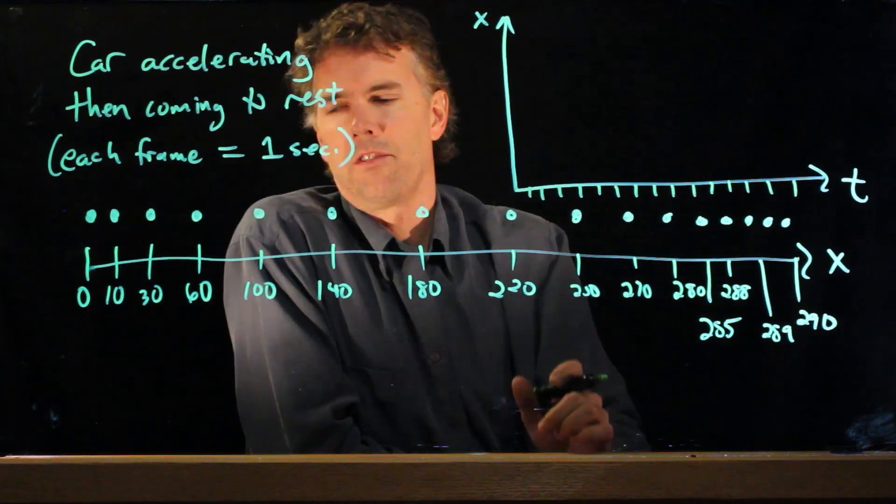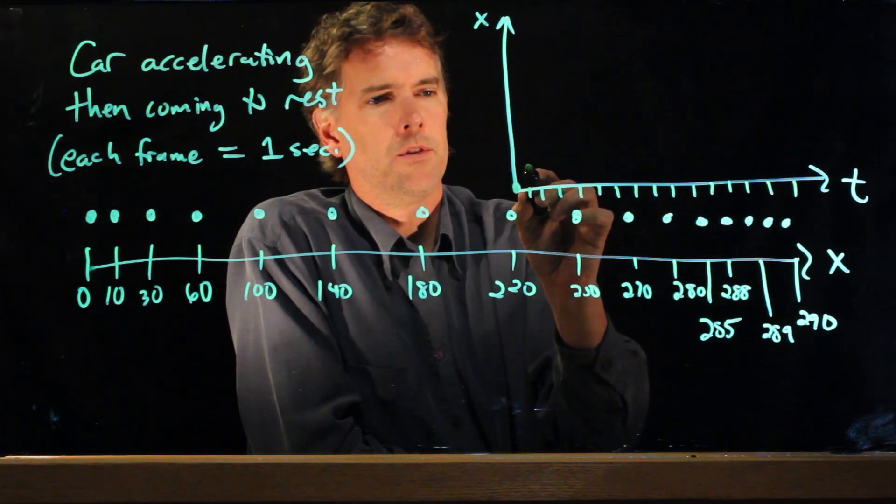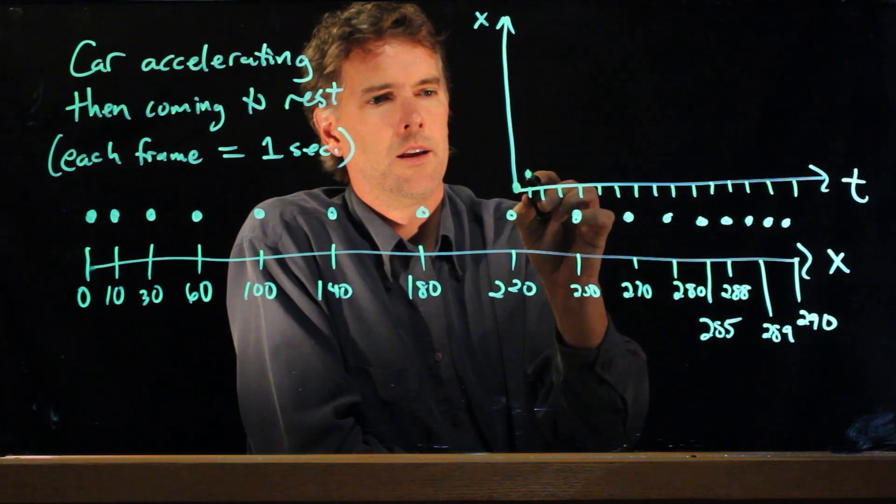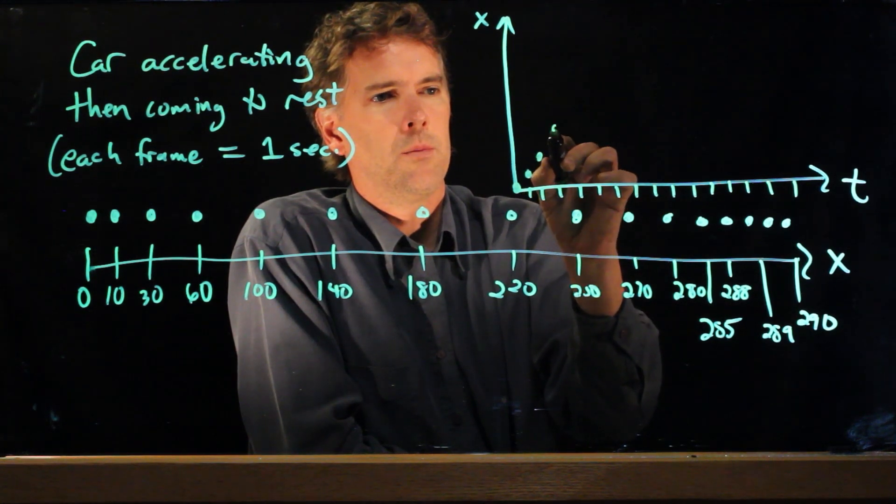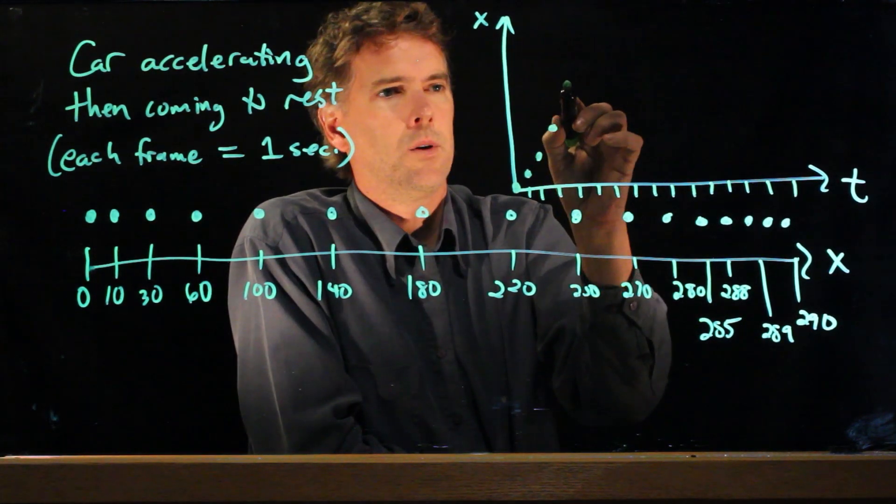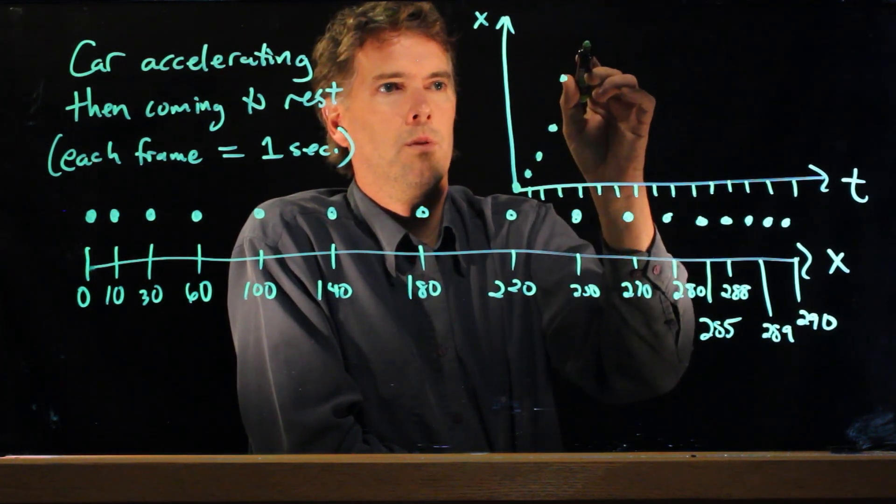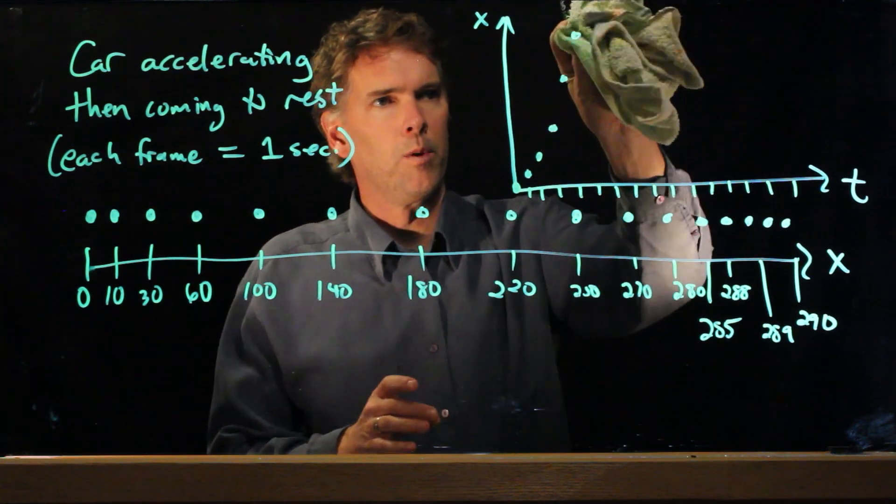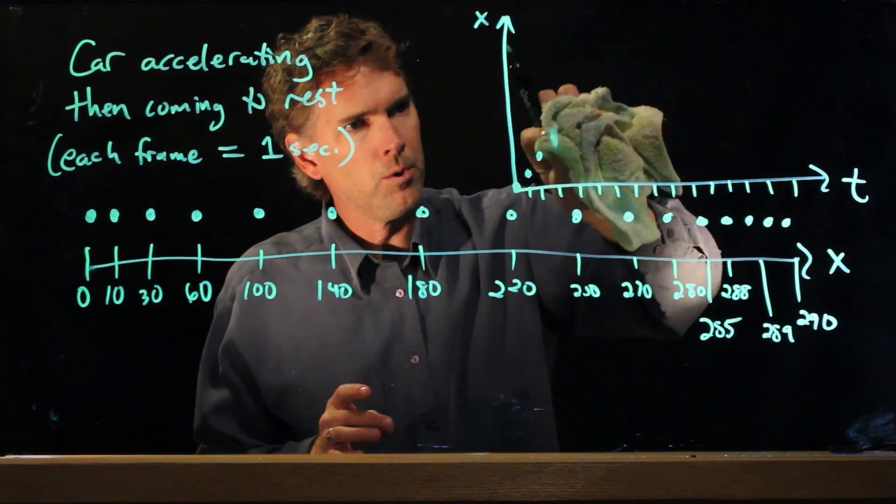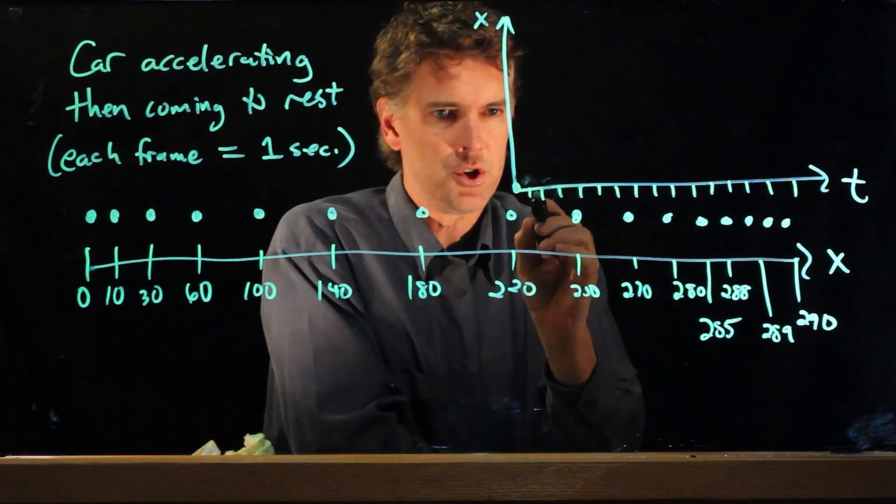All right, we start at 0. Then we go to position 10. Then we go to position 30. Then we go to position 60. Then we go to position 100. And now we go to position 140. And so forth. And you can see right off the bat we're going way too steep. We're going to run out of room on our graph. So let's try it again. We'll go a little bit more shallow.